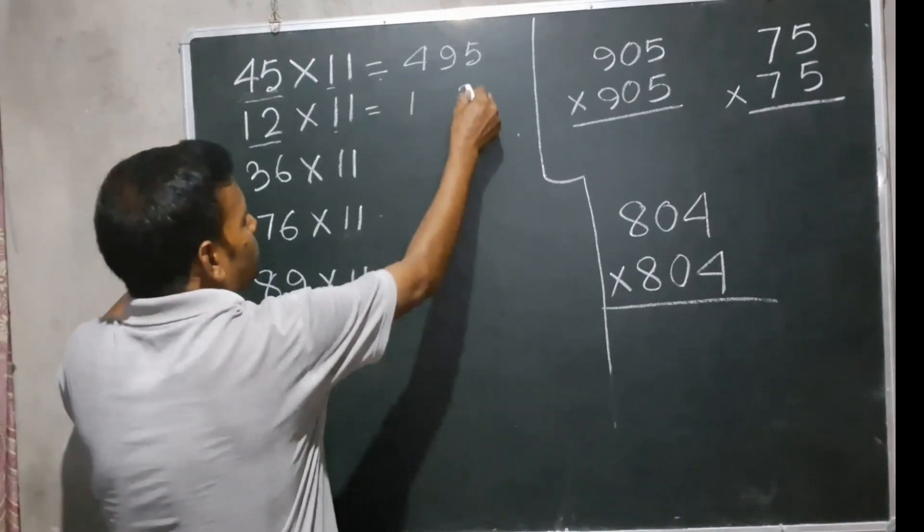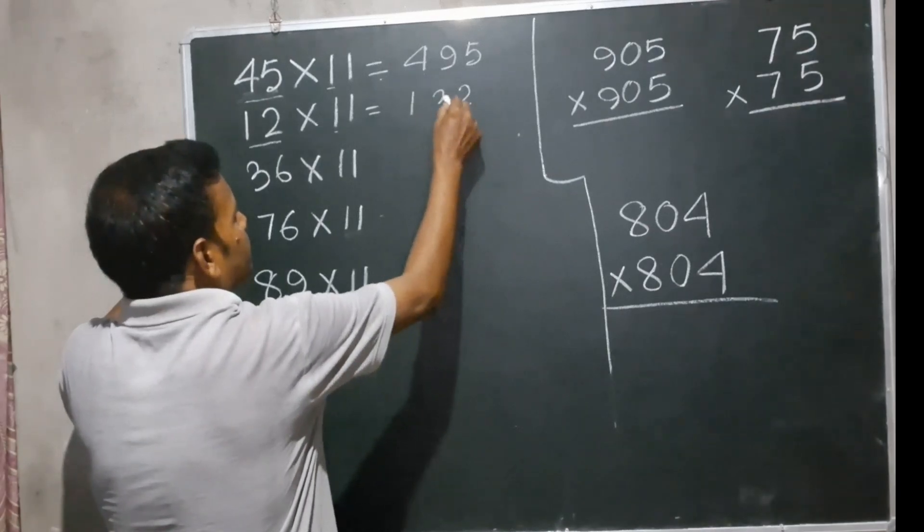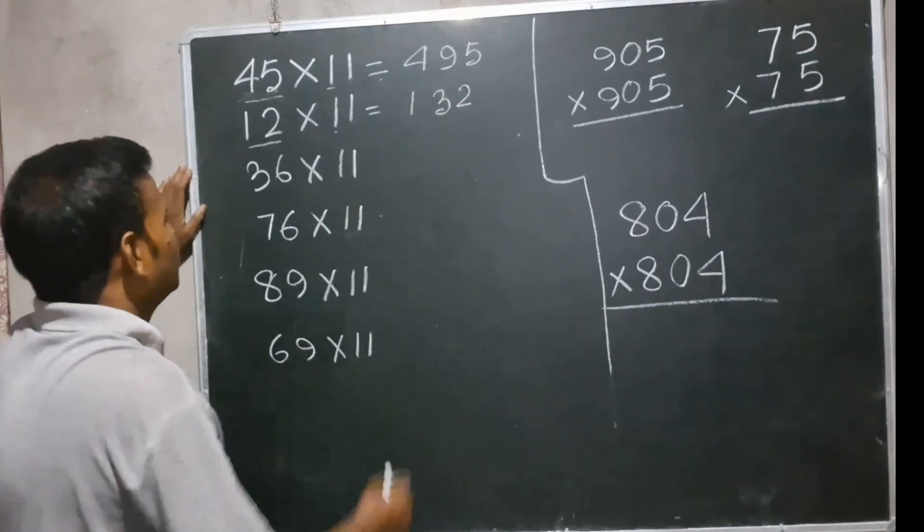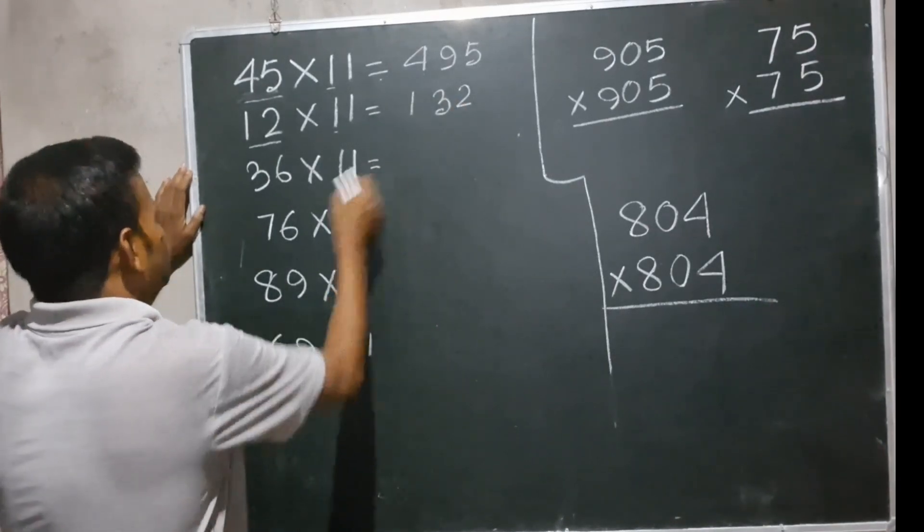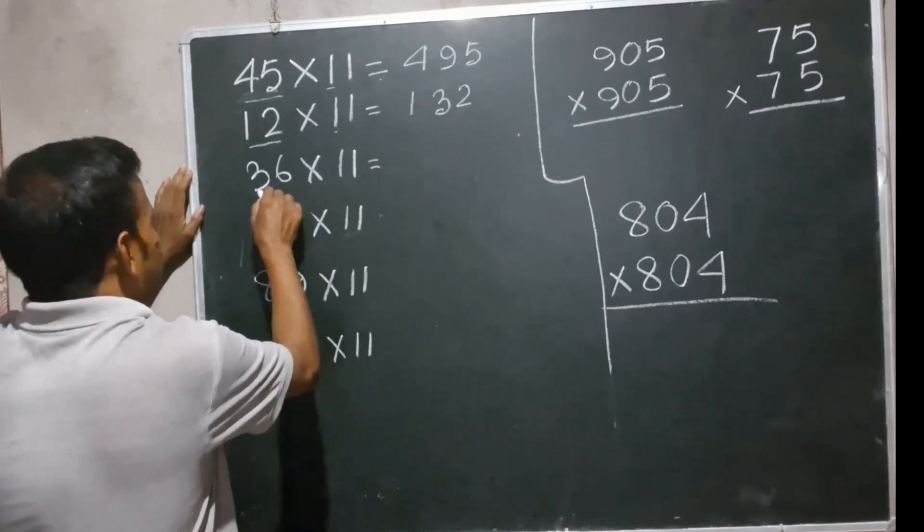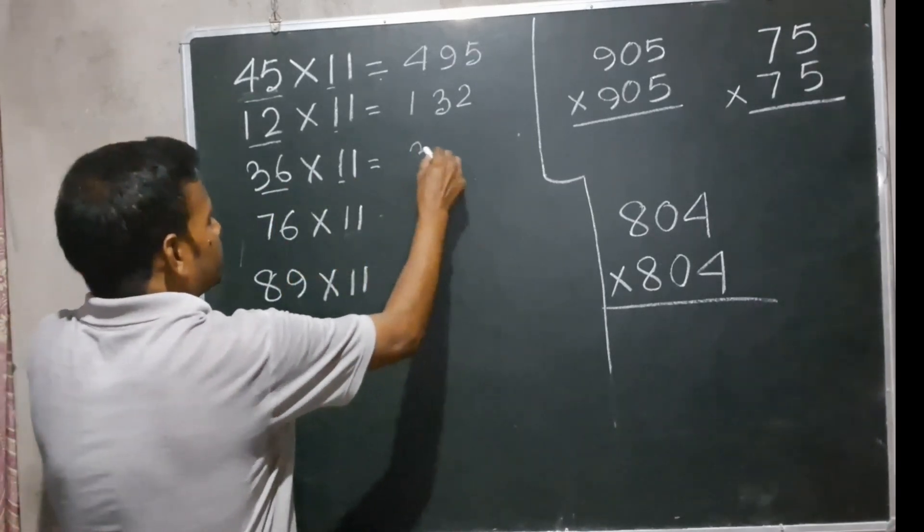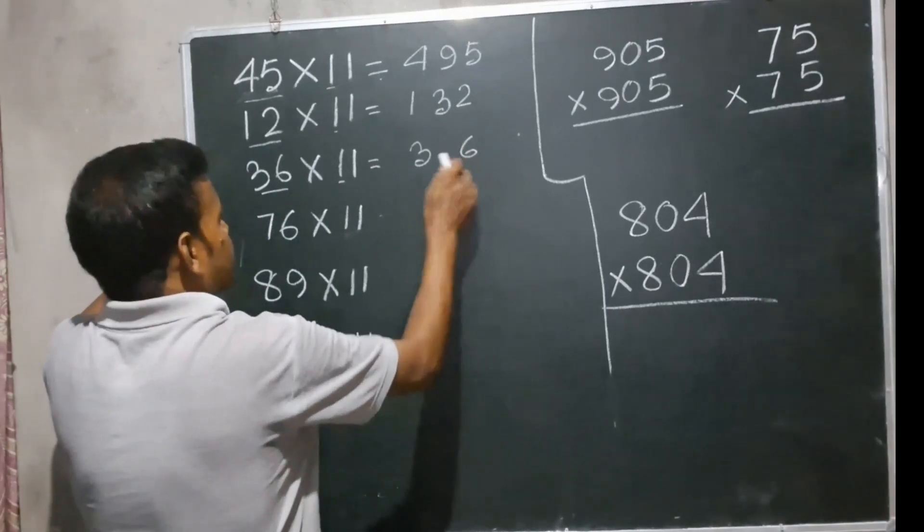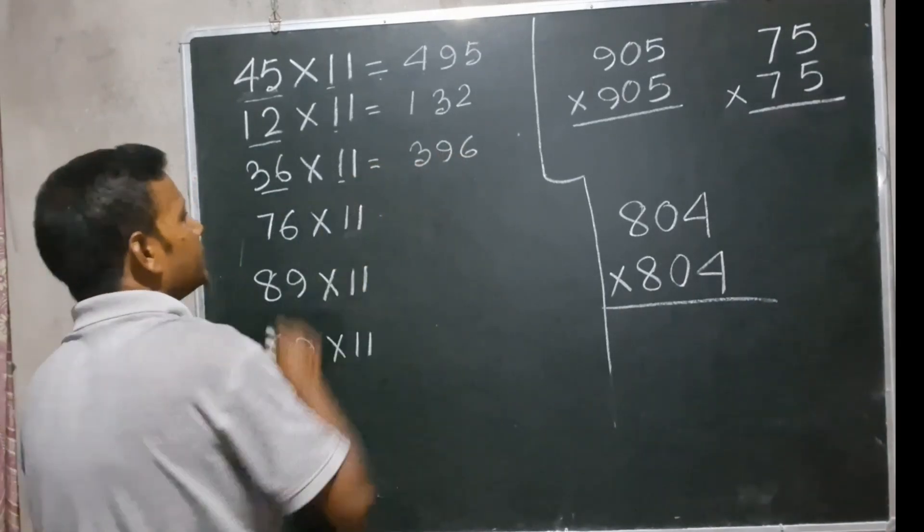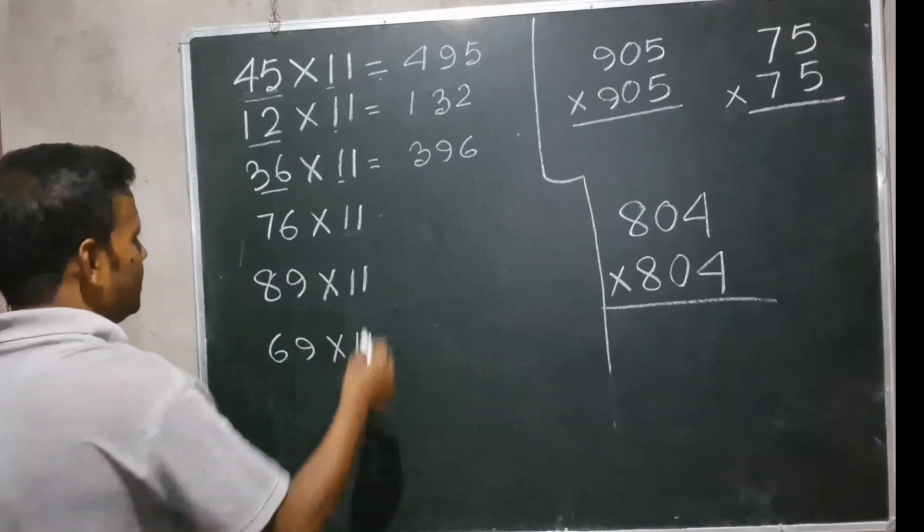Now 36. We have to multiply with 11. 36 ones are 36. Write 6, and 3 plus 6 equals 9, so 396. Now next one.